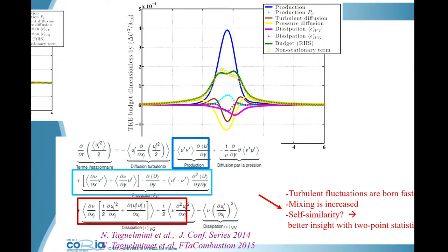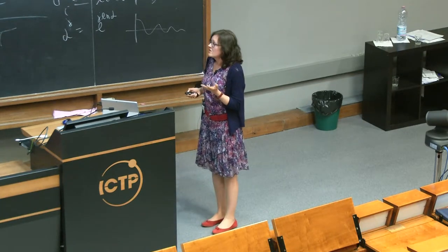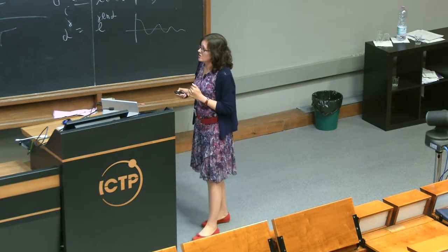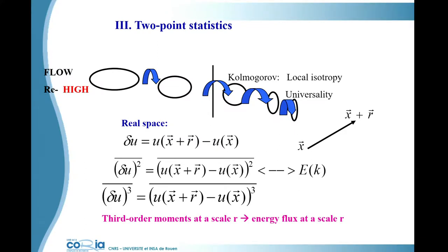Having shown turbulence fluctuations are born faster and mixing is increased, the next question is: do we have self-similarity? In a round jet, one of the self-similar flows, the Reynolds number — whether calculated with lambda or otherwise — stays constant along the jet axis. Is that still the case in a variable viscosity jet or in variable viscosity flows in general? We'll address this using two-point statistics. For pedagogical reasons I'll first present results for a constant viscosity flow, then move to variable viscosity. This is the image of the cascade as introduced by Richardson, and Kolmogorov stated that if the Reynolds number is sufficiently high, all small scales should be locally isotropic and universal.